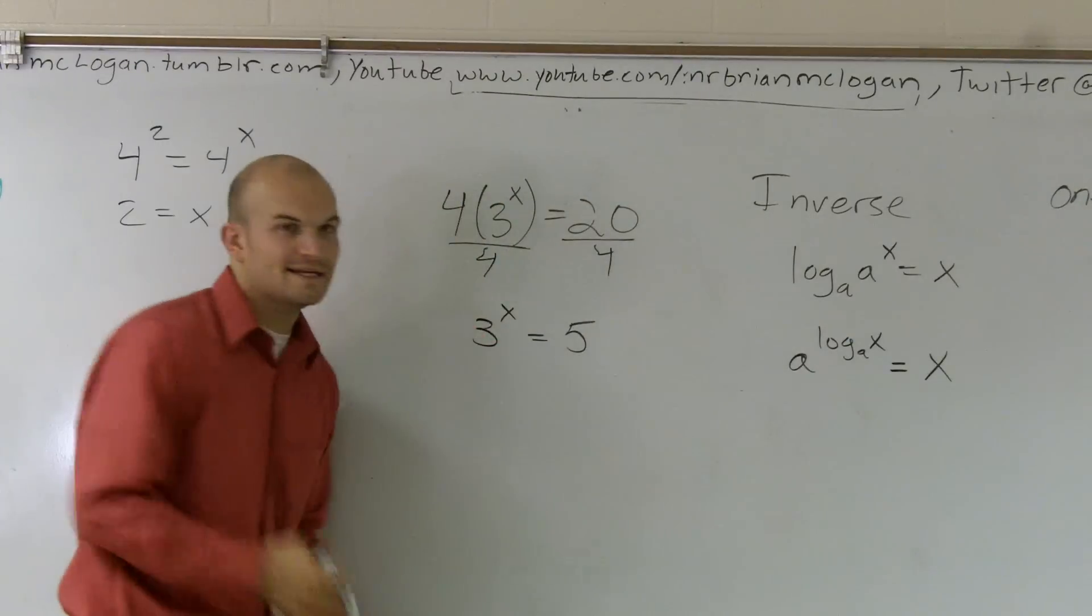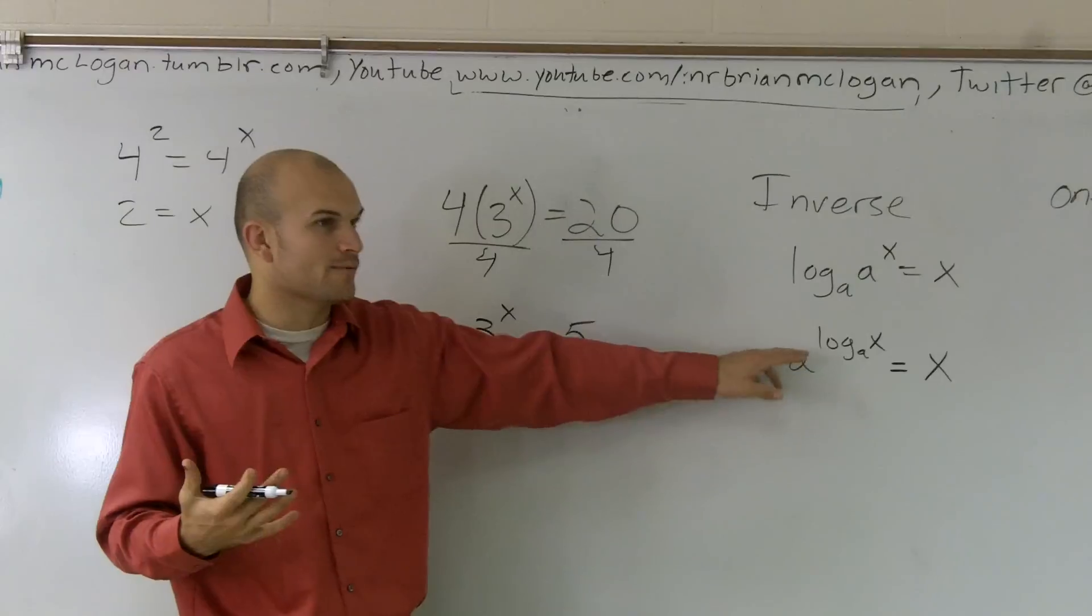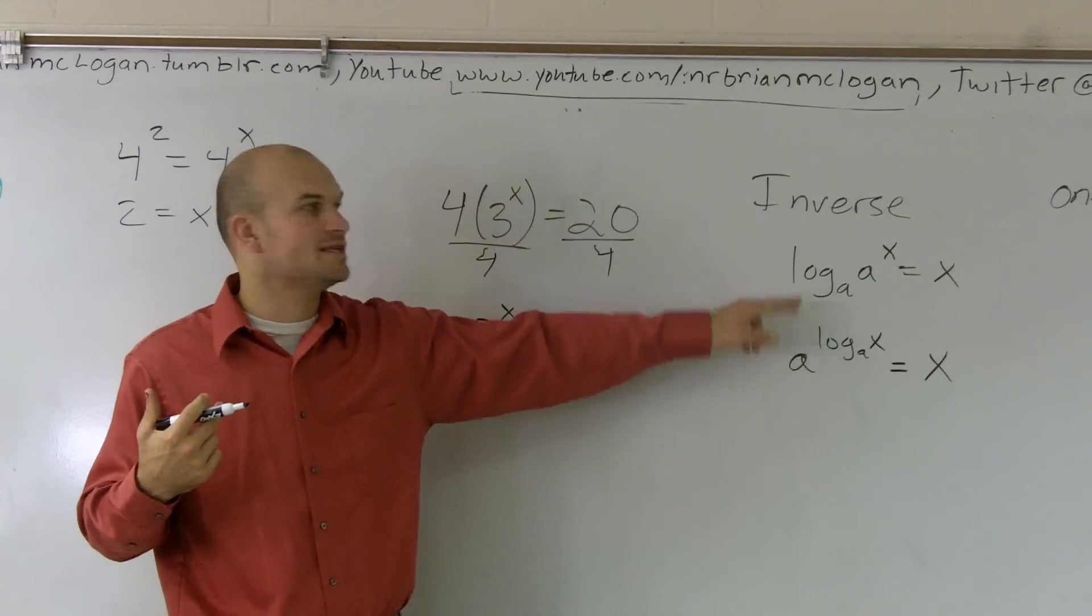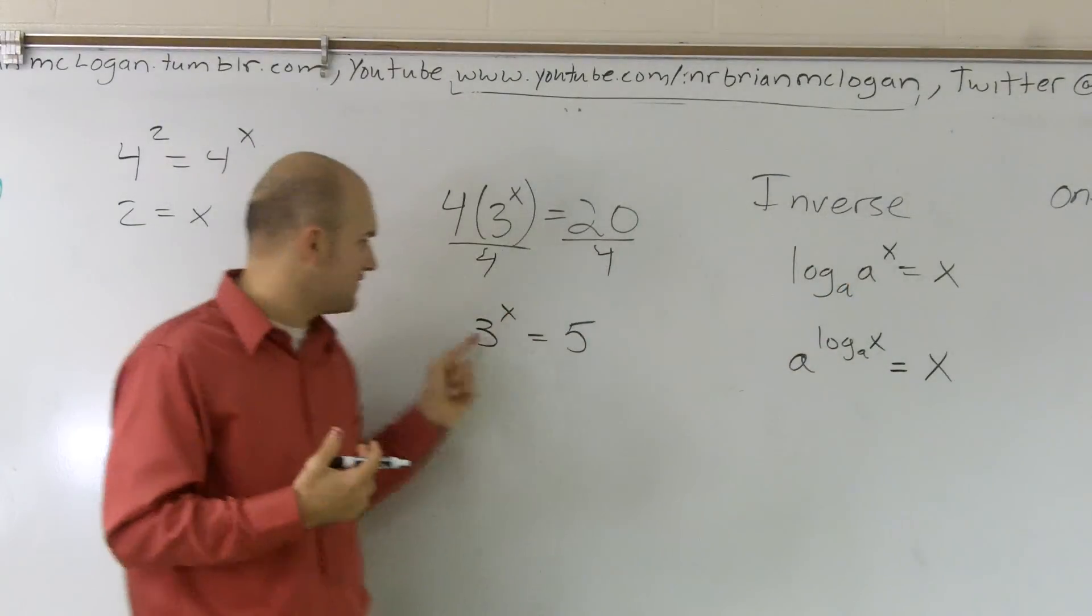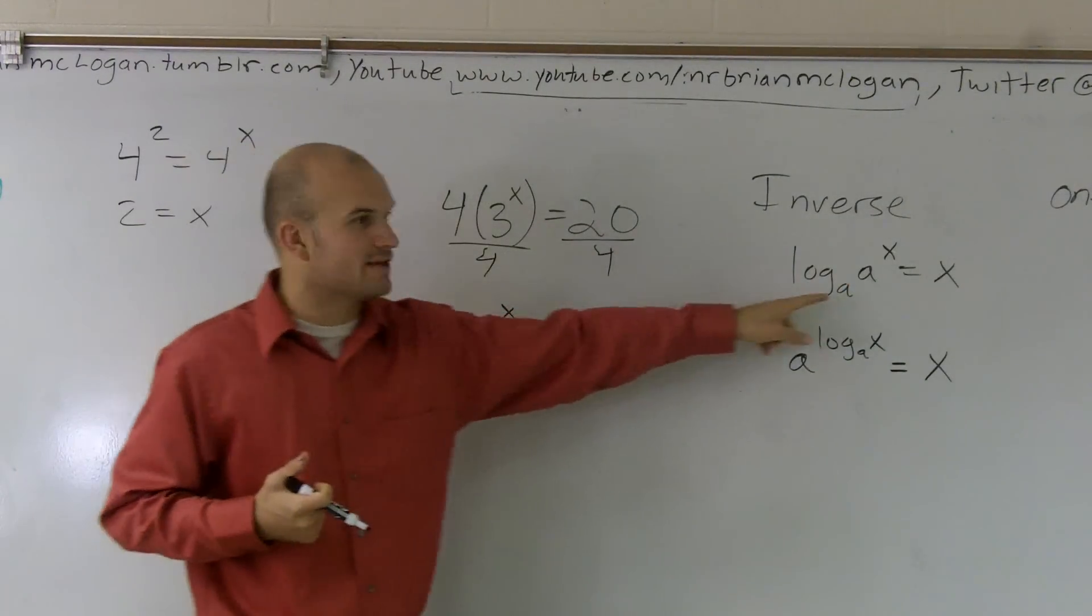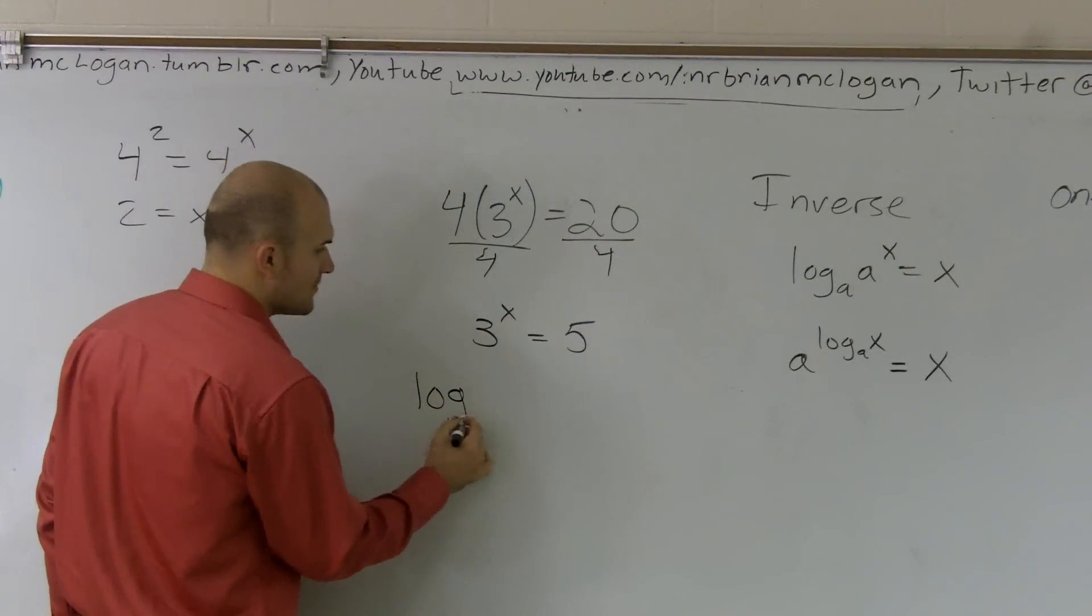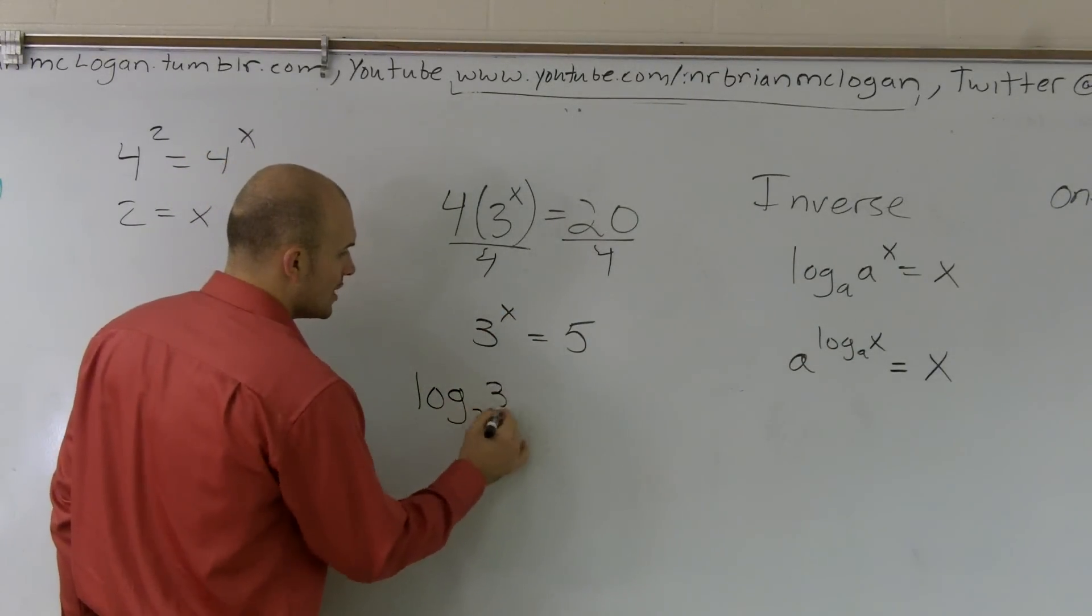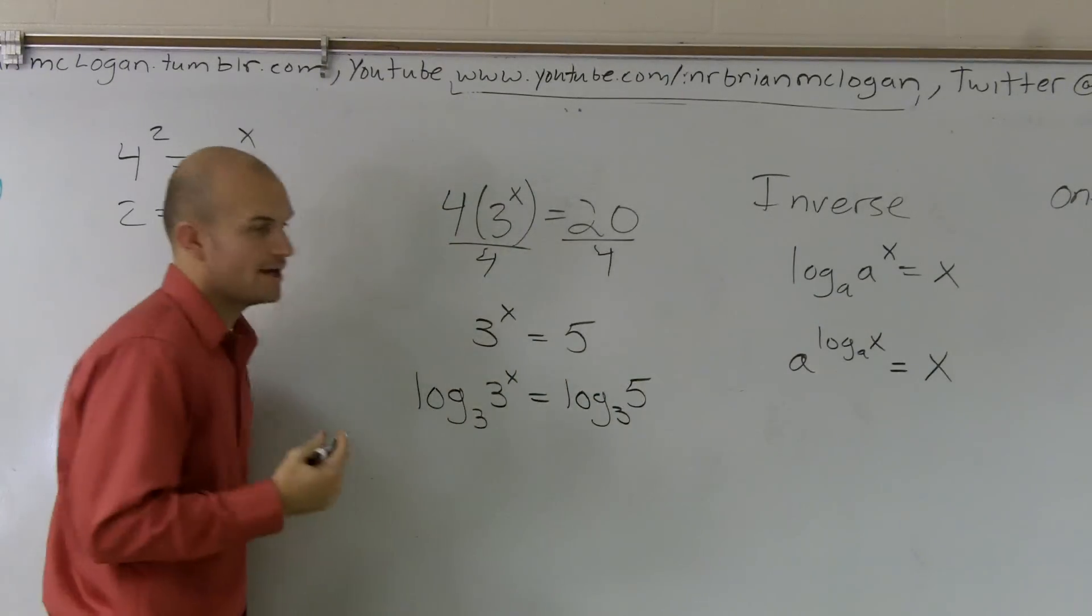So I need to think of a different way I can do this. Well, that was one way we used our inverse property. Let's use the other form of our inverse property. If I'm evaluating for three raised to the x, if I take the log base three of this, right, what's going to happen is I'm going to take the log base three of three to the x equals log base three of five, right?